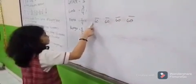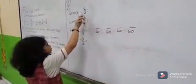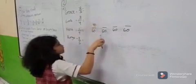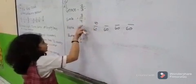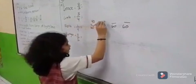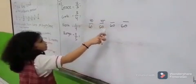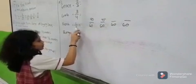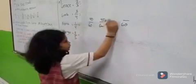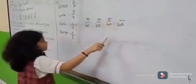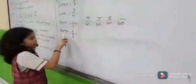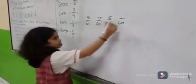Sixty divided by three is twenty; twenty times two is forty. Sixty divided by four is fifteen; fifteen times three is forty-five. Sixty divided by four is fifteen; fifteen times one is fifteen. Sixty divided by five is twelve; twelve times three is thirty-six.